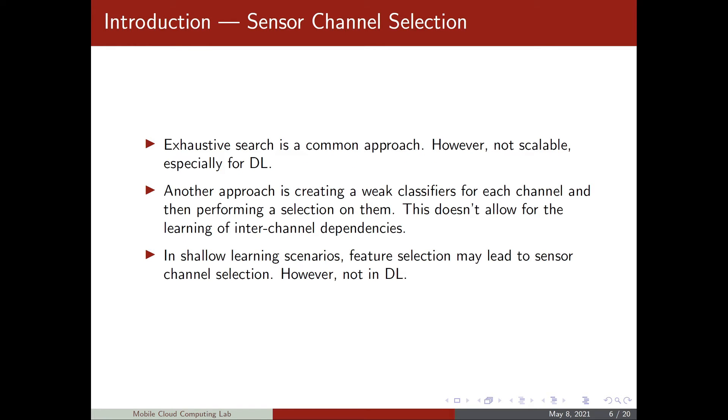A common approach to sensor channel selection is by employing exhaustive search, however this approach is not scalable, especially for deep learning, because as we increase the number of sensor channels, the number of possible combinations of these channels increases exponentially.